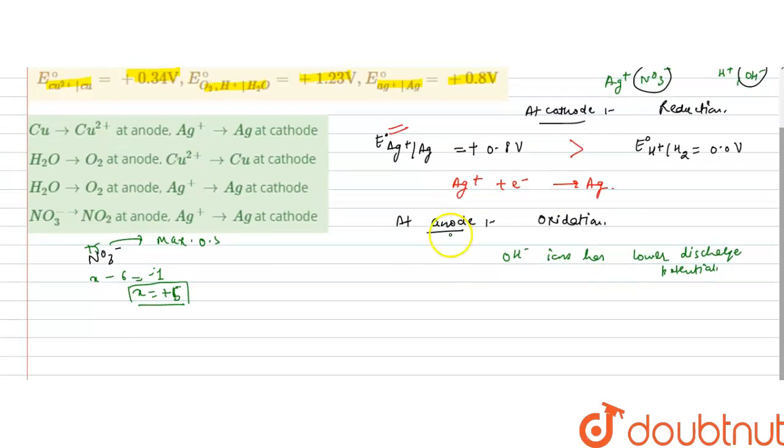And the reaction that takes place is OH⁻ will be oxidized. It will form water, oxygen, and release electrons. Now if we balance this, it will be 4OH⁻ → 2H₂O + O₂ + 4e⁻. It means oxygen is liberated at anode.